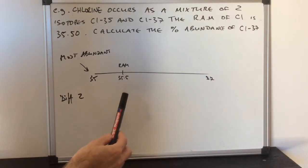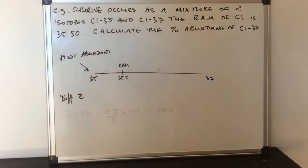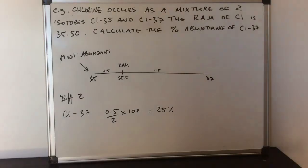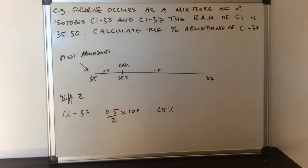Whereas the 37 is pulling away from this 35 just by this little amount here. For the chlorine-37 we've got that pull of 0.5 of the difference of 2 times 100. So that comes out at a 25% abundance.